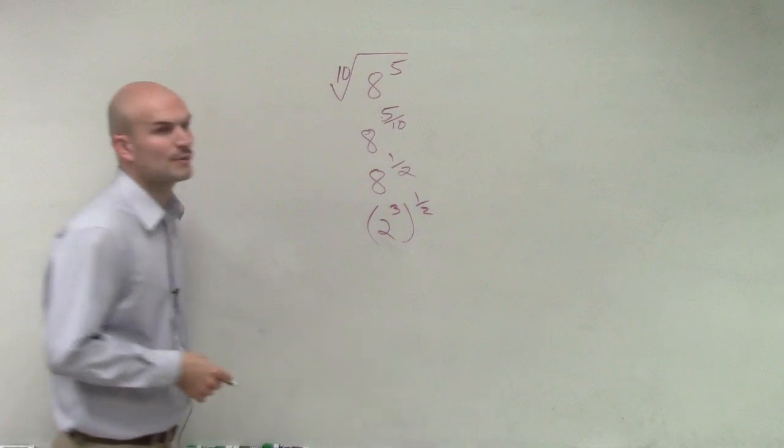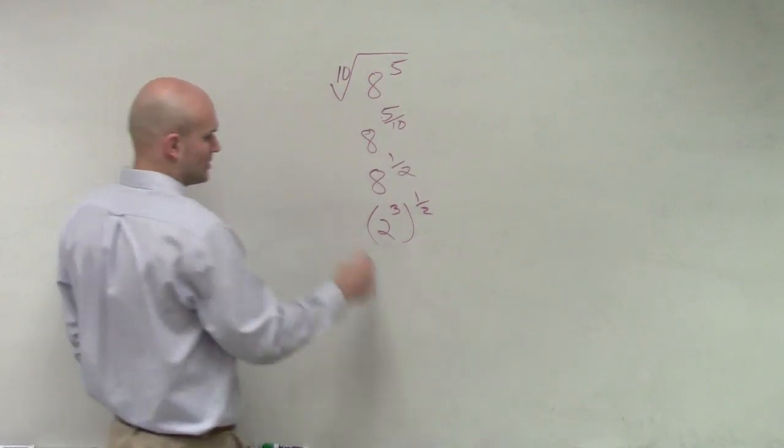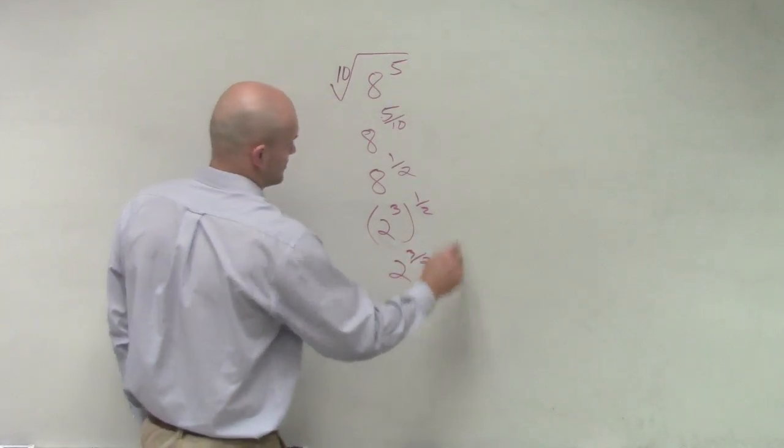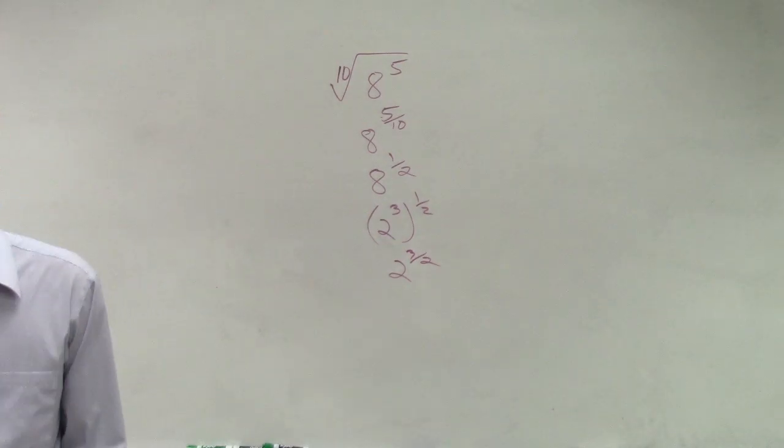And then what do we do when we have a power of a power? Multiply across. There you go. Simplified, or not evaluated, but simplified form.